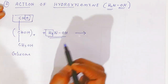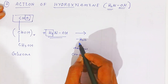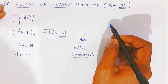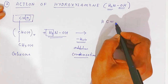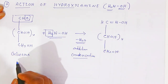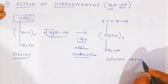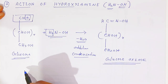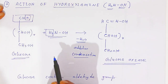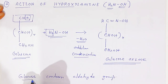The oxygen of the aldehyde reacts with the hydroxylamine and there is a removal of water molecules — this is a condensation type of addition reaction. The aldehyde group is converted to a C=N–OH (oxime) group while the rest of the molecule remains as (CHOH)4–CH2OH. This product is called glucose oxime. The formation of glucose oxime shows that glucose contains an aldehyde group.